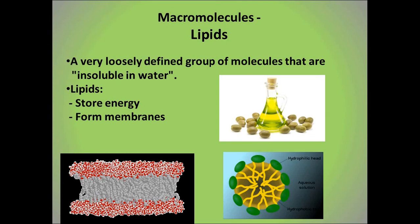Our last group of macromolecules are the lipids — a very large group generally defined as those insoluble in water. Lipids form membranes, as we saw with the phospholipid bilayer, and they store energy. Fats have twice as many carbon-hydrogen bonds as carbs, so they store about two and a half times more energy. Energy not immediately used by an organism is converted into a lipid — oil in plants or fat in animals. People get fat because we consume more energy than the body uses, storing it for later. We harvest plant oils in forms like corn oil and olive oil.